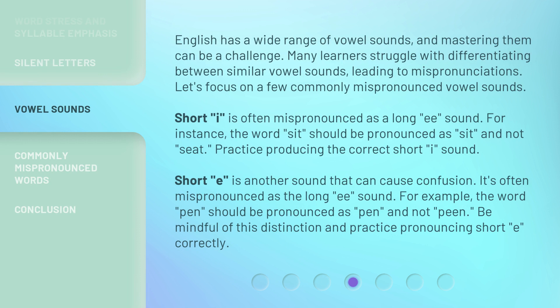English has a wide range of vowel sounds, and mastering them can be a challenge. Many learners struggle with differentiating between similar vowel sounds, leading to mispronunciations. Let's focus on a few commonly mispronounced vowel sounds. Short 'I' is often mispronounced as a long 'EE' sound. For instance, the word 'sit' should be pronounced as 'sit,' and not 'seat.' Practice producing the correct short 'I' sound.